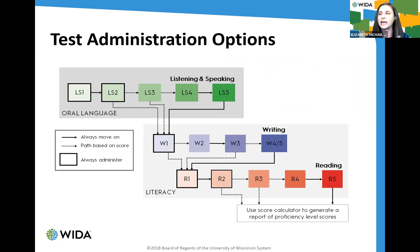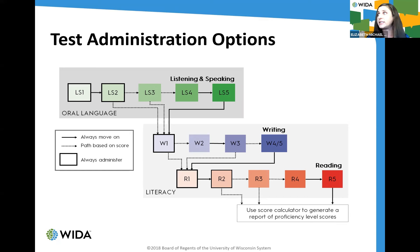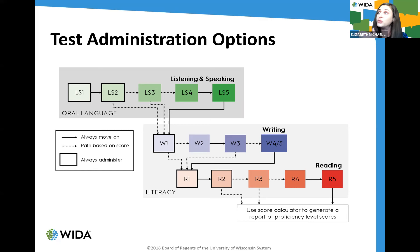What you see in front of you is an example of the different pathways you can take in the test. This is an individually administered, paper and pencil test that takes a maximum of about 40 minutes. The test administrator reads the story aloud and then, using a provided script, leads the student through a series of questions and activities assessing listening, speaking, reading, and writing. Items get harder within each section, starting at proficiency level one and working up. This visual is from the TAM — the test administrator manual — and shows the flow of test administration options.